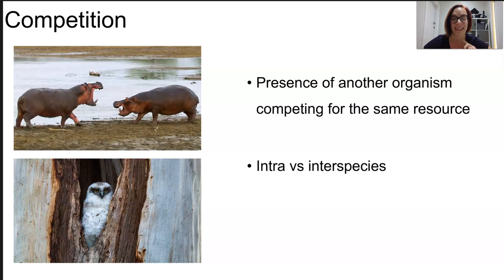Now competition can be intraspecific, so between members of the same population or it can be between organisms in different species. Generally competition between different species occurs between members at the same trophic level of a food chain. So producers with producers, herbivores and herbivores, carnivores, carnivores, you get the idea.